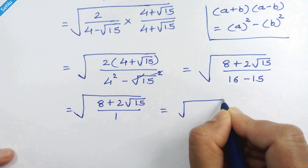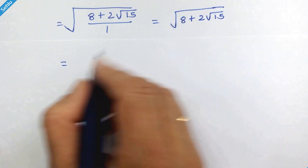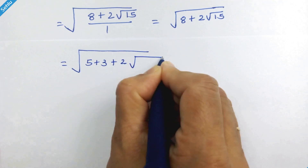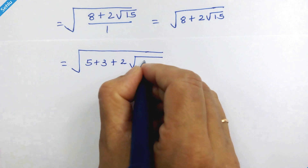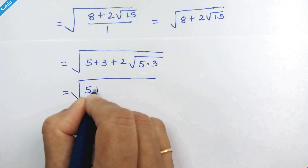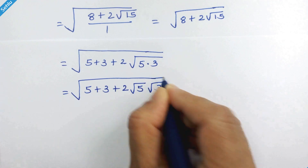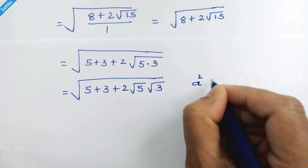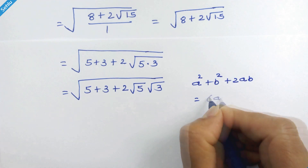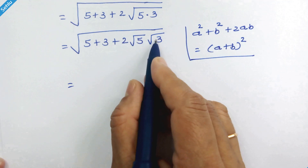So it will be 8 plus 2 times square root of 15. Now 8 can be written as 5 plus 3, and 15 can be written as 5 times 3. So it will be square root of 5 plus 3 plus 2 times square root of 5 times square root of 3. This is the identity a squared plus b squared plus 2ab, which equals a plus b whole squared.